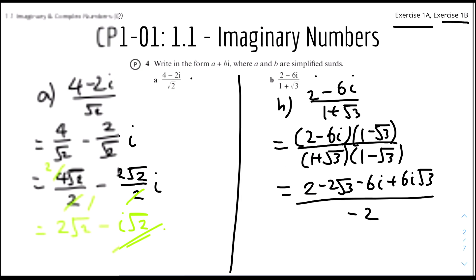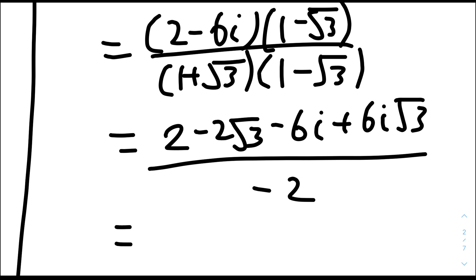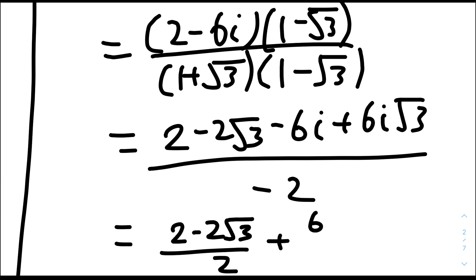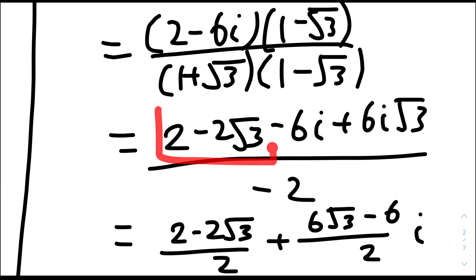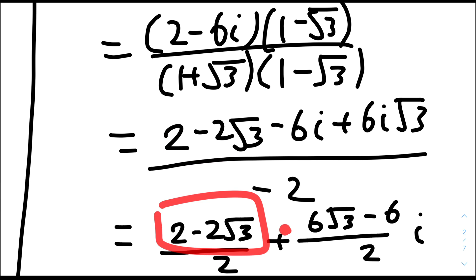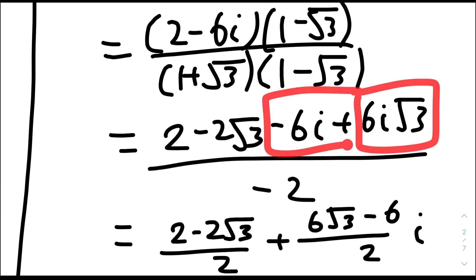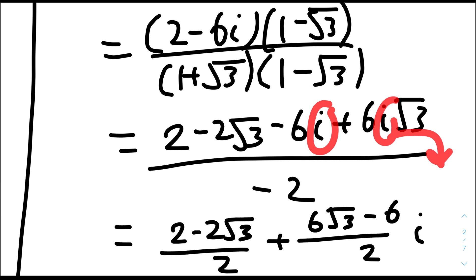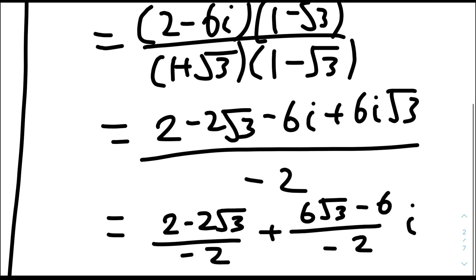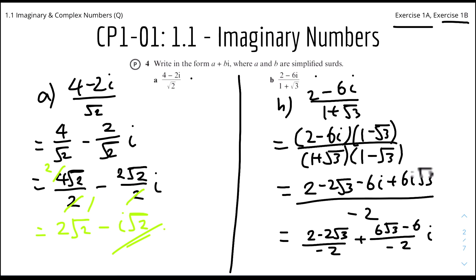Now we group the terms — separating the non-imaginary and imaginary parts. The real part is 2 minus 2 root 3, and the imaginary part is 6 root 3 minus 6 (both contain i), so we factor i out to get (6 root 3 minus 6)i. All of this is over minus 2.